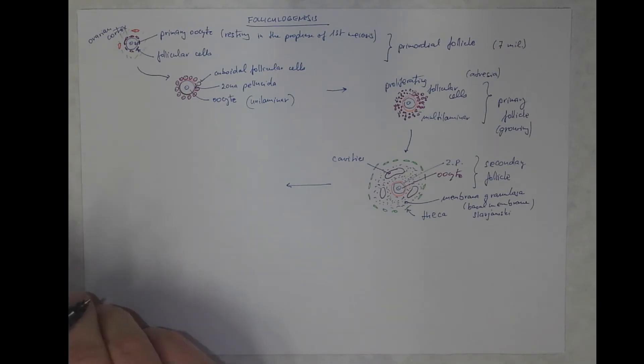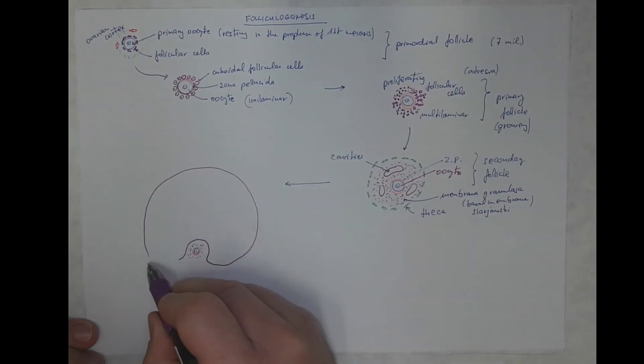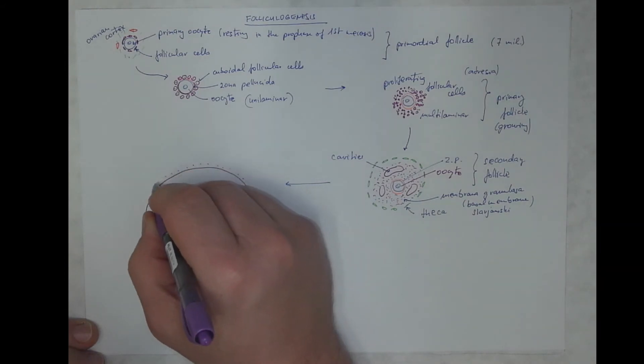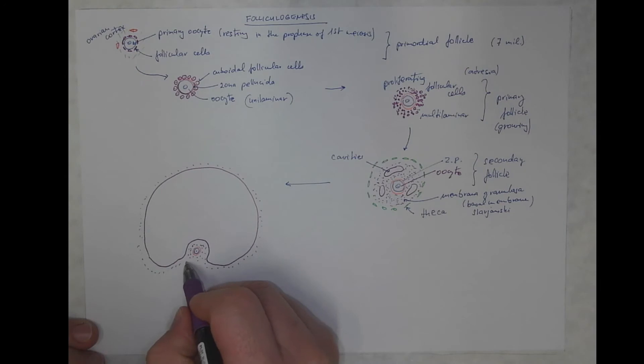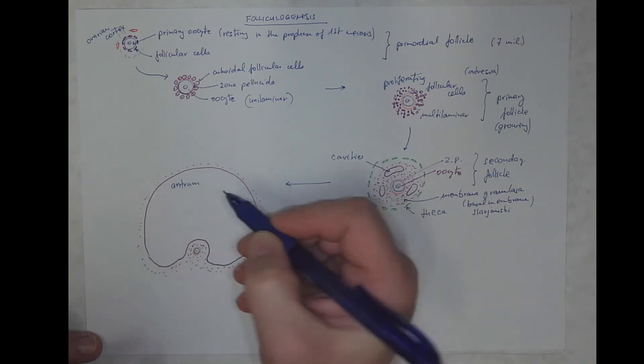This will grow further to become a tertiary follicle. Now it takes some time, but a fully developed tertiary follicle looks approximately like this. The proportions will be different. Actually the oocyte also grows, but I need to scale it. So we get the oocyte, zona pellucida, population of the membrana granulosa cells, but the cavities have fused into a huge cavity that fills most of the volume of the tertiary follicle.